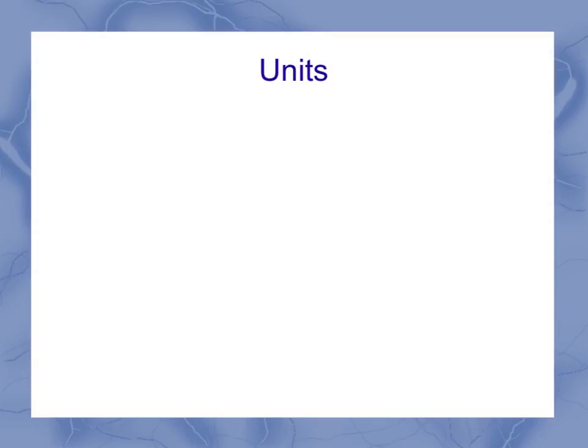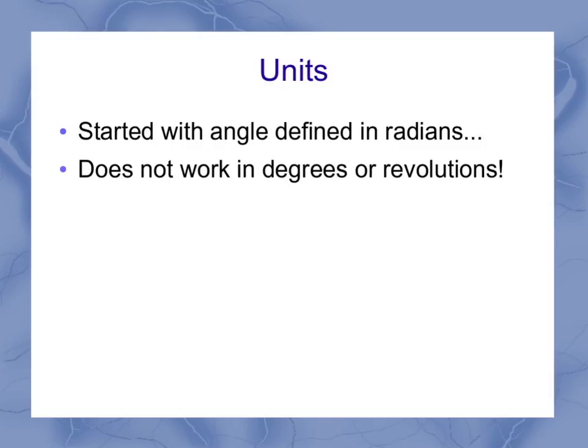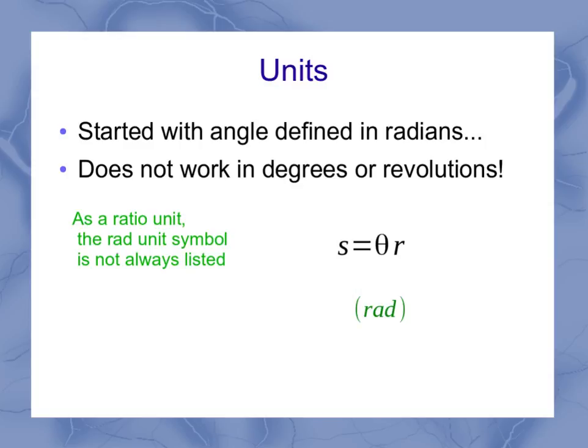Let's take a look at units, because it can get confusing on these ones. I started with an angle defined in radians. This does not work in degrees or revolutions. And as a ratio unit, we said when we first defined radians that the rad unit symbol is not always listed. It's considered a pure number, as opposed to a normal measurement unit. So when I've got my equation, s equals theta r, theta is measured in radians, but I put it in brackets to let you know that it may or may not actually be listed. Our radius, though, has to be in meters. And our path length is in meters. I find it helpful to remind students to think of radians as a placeholder unit. They're there to let us know that we're working with these ratio-type equations and that we have to use radians. But it doesn't actually affect the units of the rest of the equation.